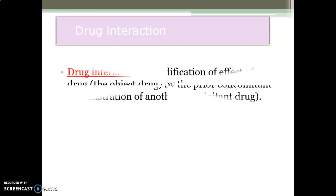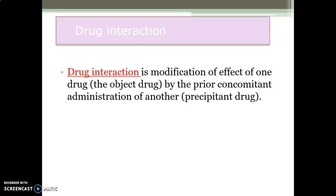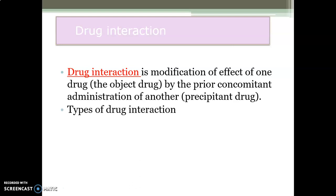Drug interaction — first we will start with the definition. Drug interaction is a modification of the effect of one drug, that is the object drug, by the prior or concomitant administration of another drug, that is the precipitant drug. The effect of the object drug is modified by the administration of the precipitant drug.